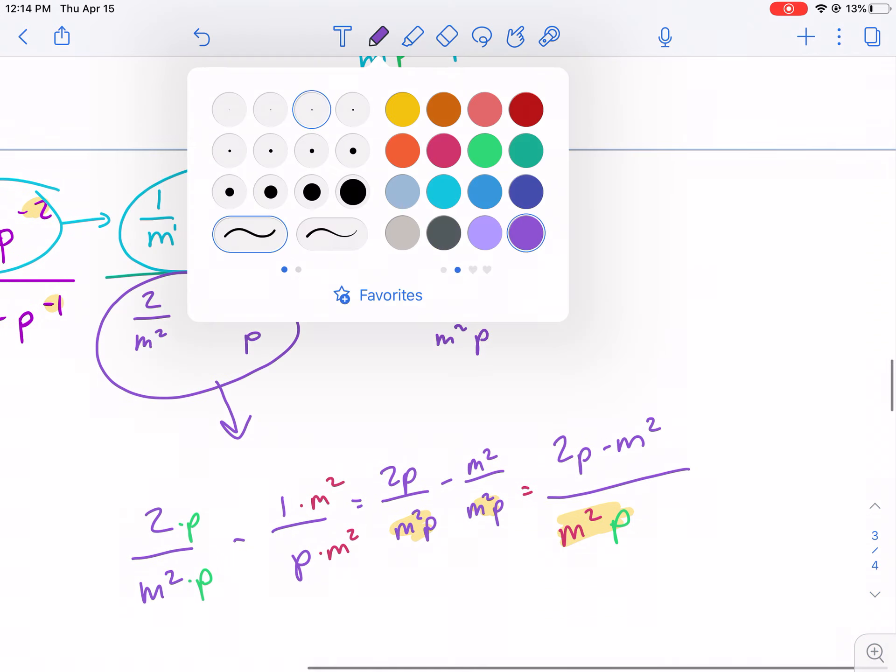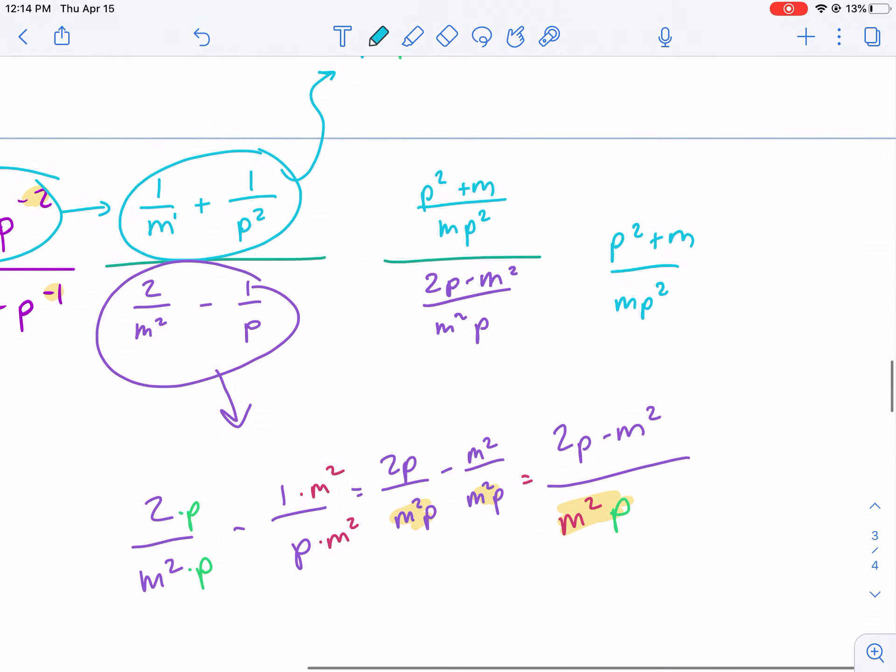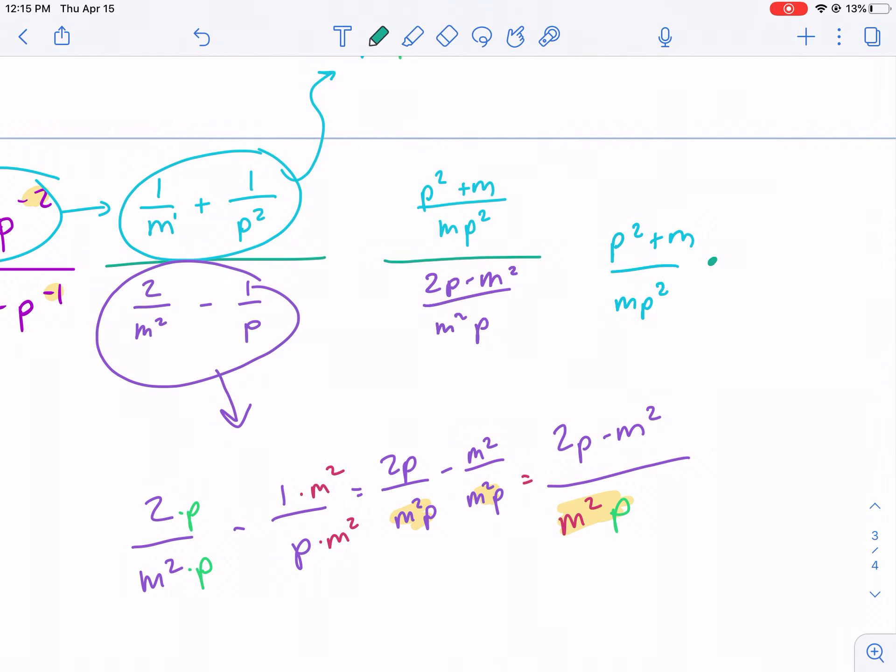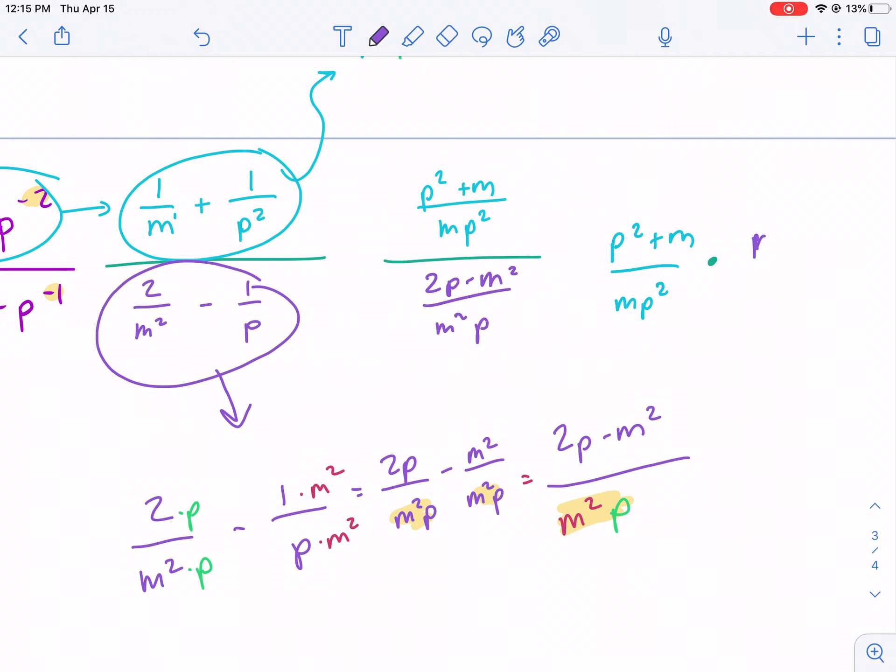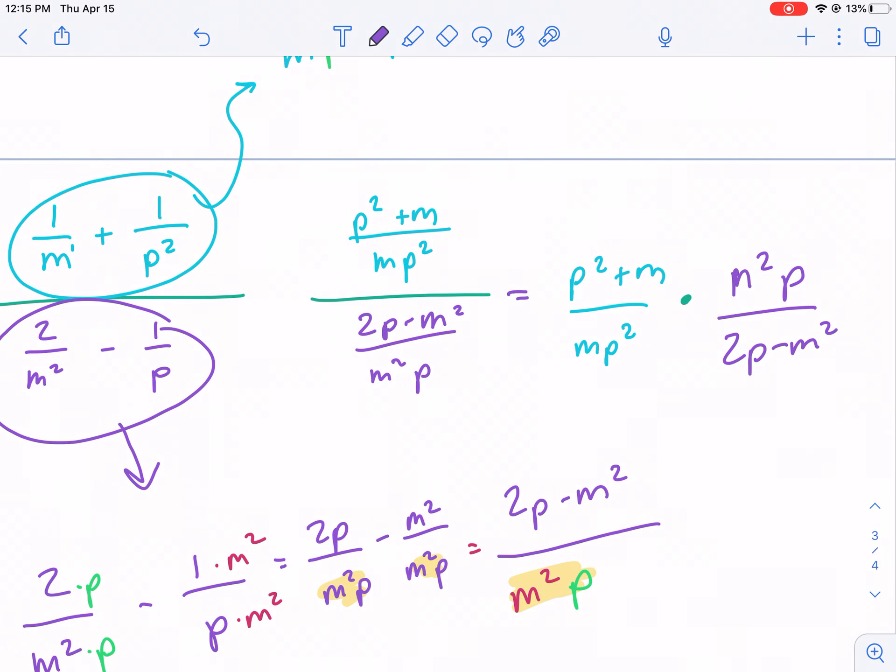Now we can keep change flip. So we're going to keep the top the same p squared plus m over m p squared. And now we're going to change this to multiplying by the reciprocal, multiplying, and then after we changed it, and then flipping. m squared p over 2p minus m squared. We're finishing this up. I'm going to put equal signs and actually going to give myself a little bit more room by making this a little bit smaller.